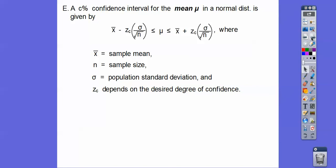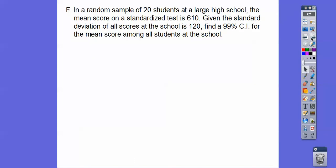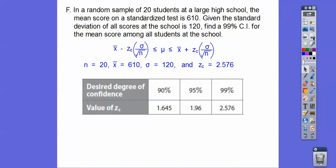In a random sample of 20 students at a large high school, the mean score on a standardized test is 610. This is N right here. Given the standard deviation of all scores is 120, find a 99% confidence interval. So that's the Z score of 2.576 for the mean score of all students in the school. We're going to plug that all in right there.